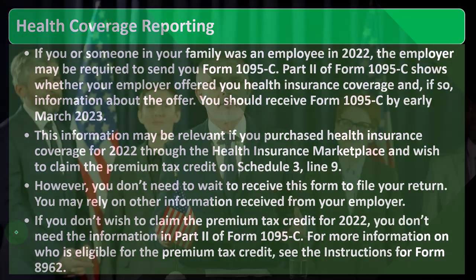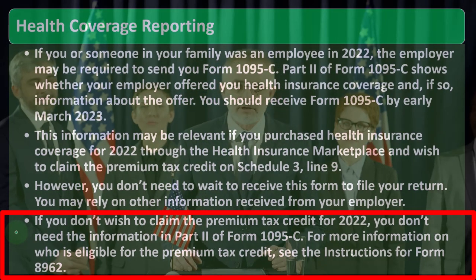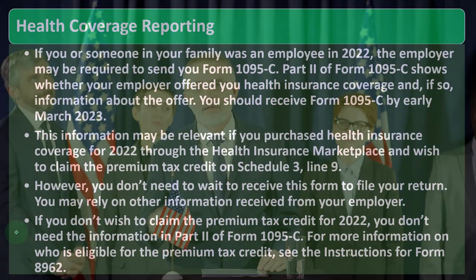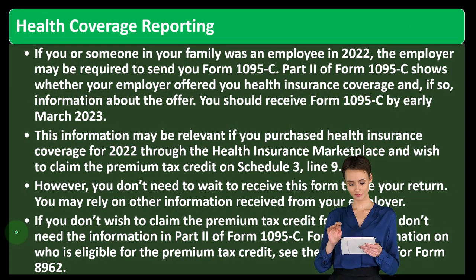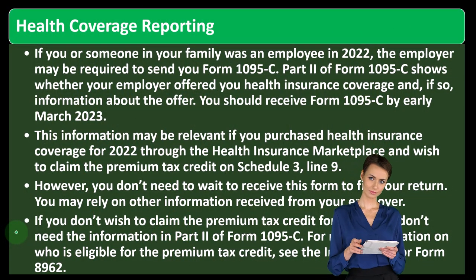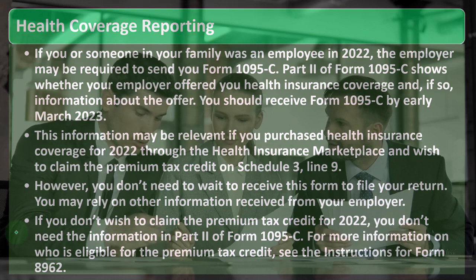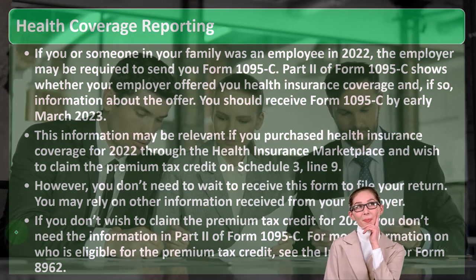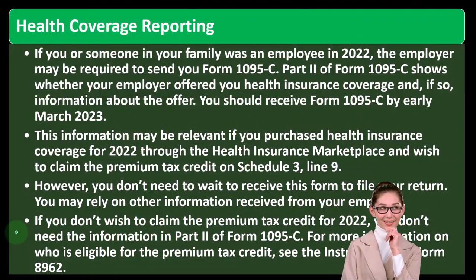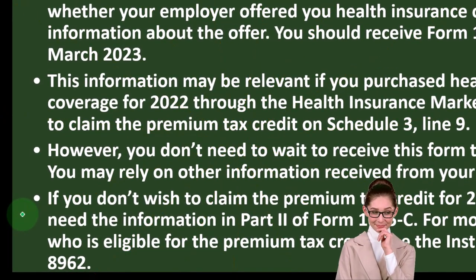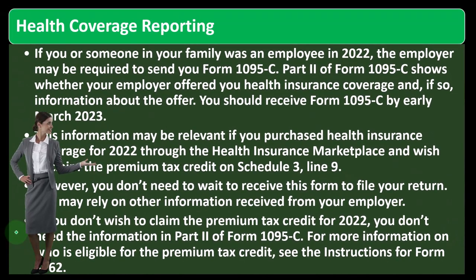The premium tax credit is for lower income individuals going through the marketplace, often to get that advanced payment, which is usually indicated by Form 1095-A. A Form 1095-C without a premium tax credit might be used just to indicate you had health insurance through the year. On the federal level they tried to force everyone to prove coverage and penalize those without health insurance to remove the free rider effect — but that ability to penalize has largely been removed. On the state side you still might have to prove you had health insurance for the year, but that's an easy checkbox compared to figuring out the advanced premium tax credit. For more information on who is eligible, see the instructions for Form 8962.